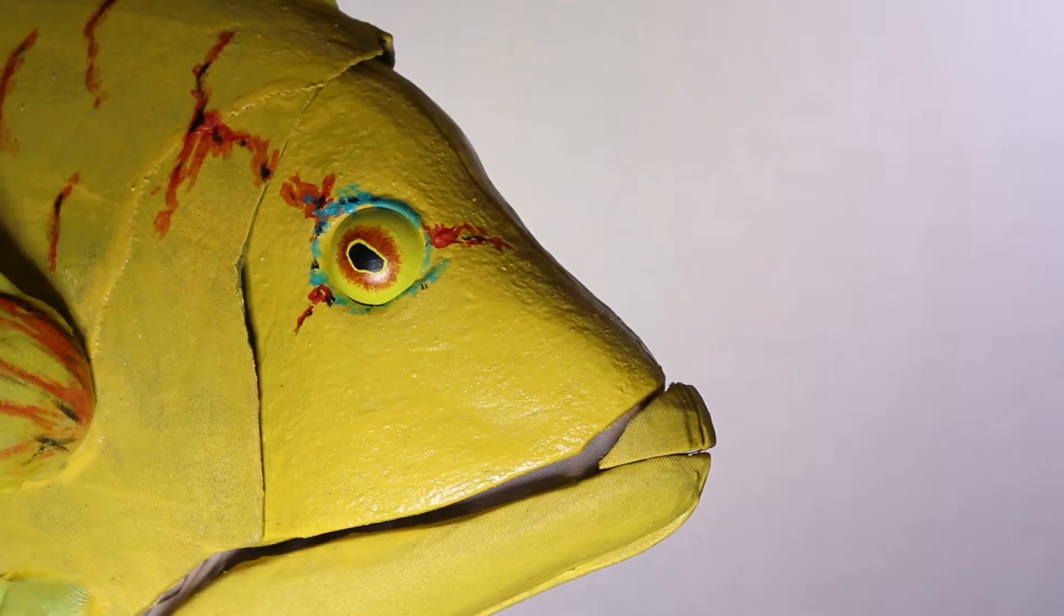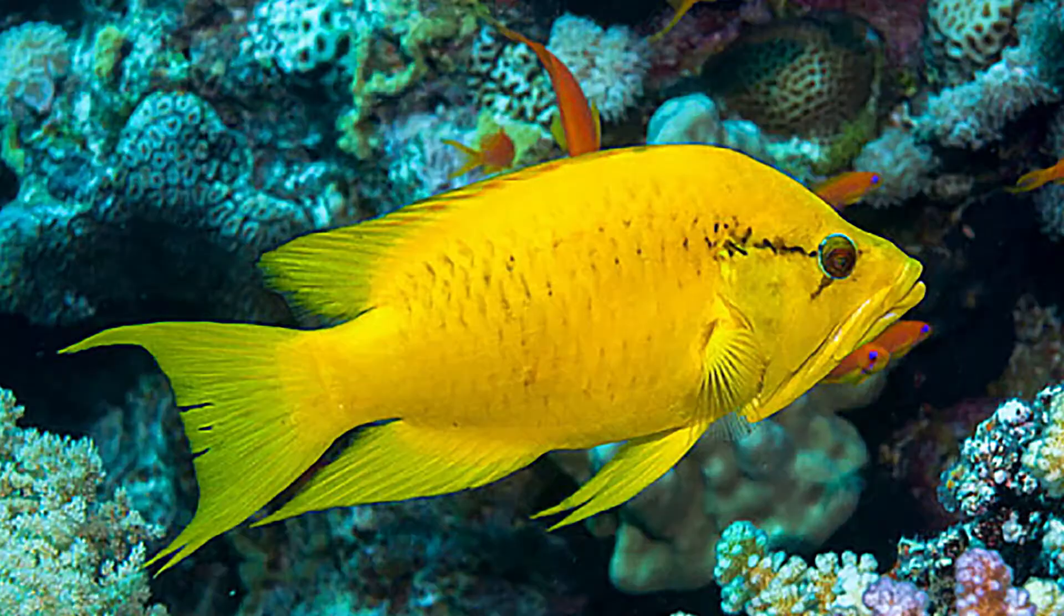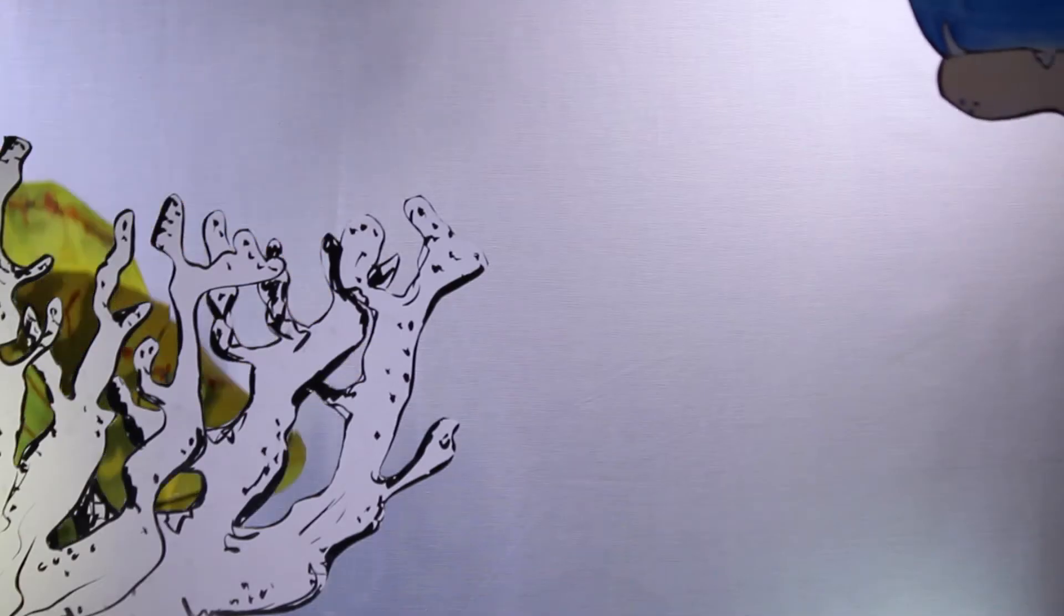This is a sling jaw wrasse. It is like most other reef fish. It hides from predators.